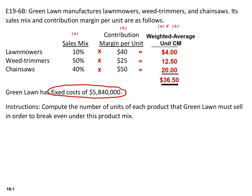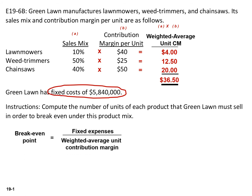We have a fixed cost of $5,840,000. If we simply take our $36.50 and divide that into our fixed cost of $5,840,000, the breakeven point is going to be 160,000 units.